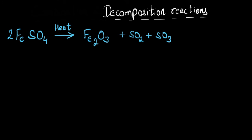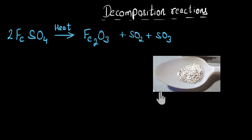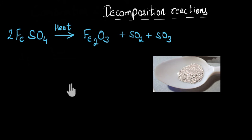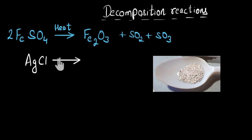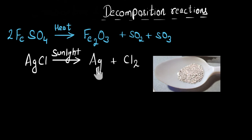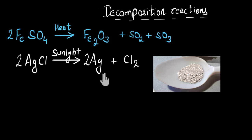Here I have a spoonful of silver chloride — a white powder — and I'm going to leave it under sunlight. After a while, I see the color has changed to grayish. This color change tells me a chemical reaction is occurring. Silver chloride (AgCl) uses the energy from sunlight and decomposes into silver (Ag) and chlorine gas (Cl2). Balancing: 2AgCl decomposes into 2Ag plus Cl2. This is also a decomposition reaction — one big molecule breaking down into two smaller molecules using energy from sunlight.